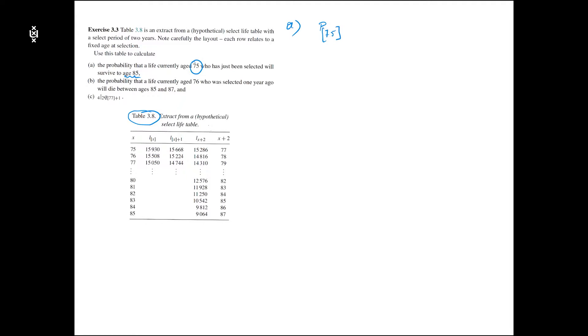This life has to survive until age 85, so survival for another 10 years. In order to calculate this survival probability we have L75, so someone who was selected at age 75 has to survive for another 10 years.